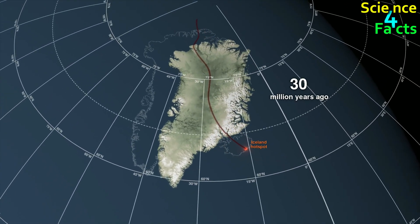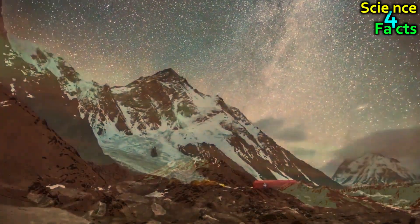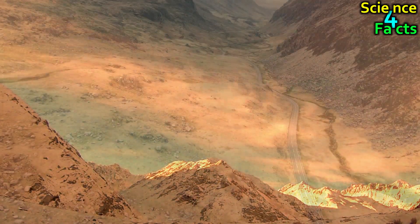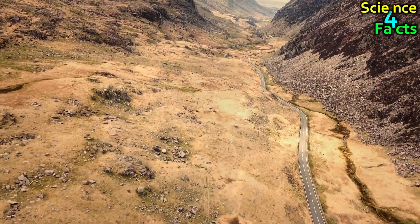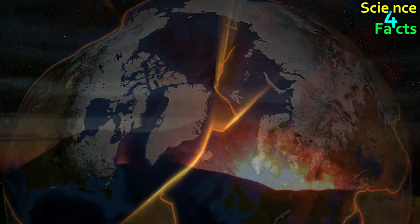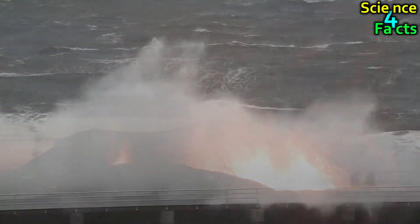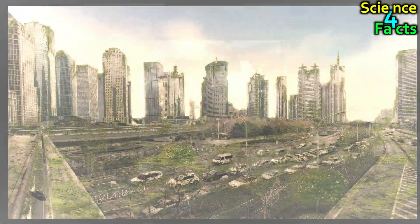Where plates come together, they can create mountain ranges, such as the Himalayas or the Andes. Where plates move apart, they can create deep valleys, such as the Great Rift Valley in Africa. The interaction between plates can also create volcanoes, earthquakes, and tsunamis, all of which can have a significant impact on the planet's surface and its inhabitants.